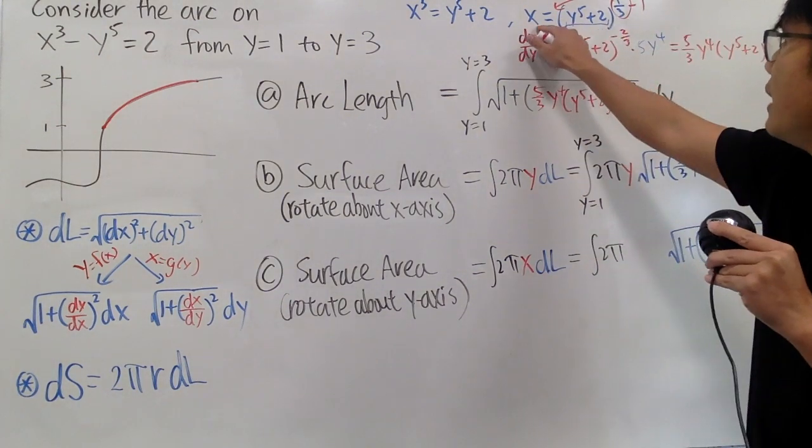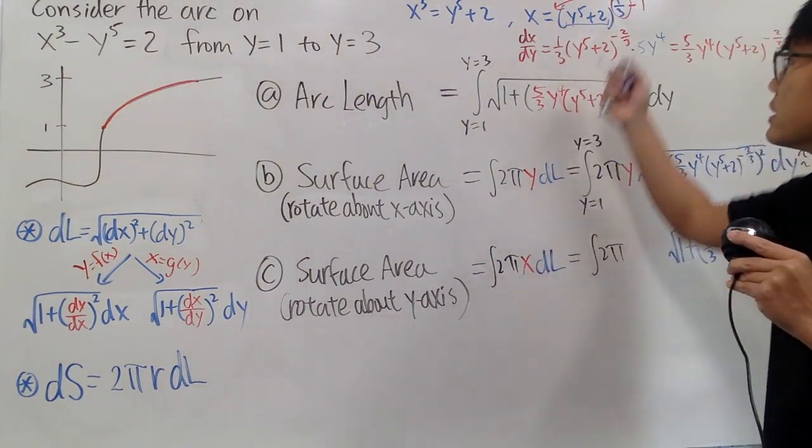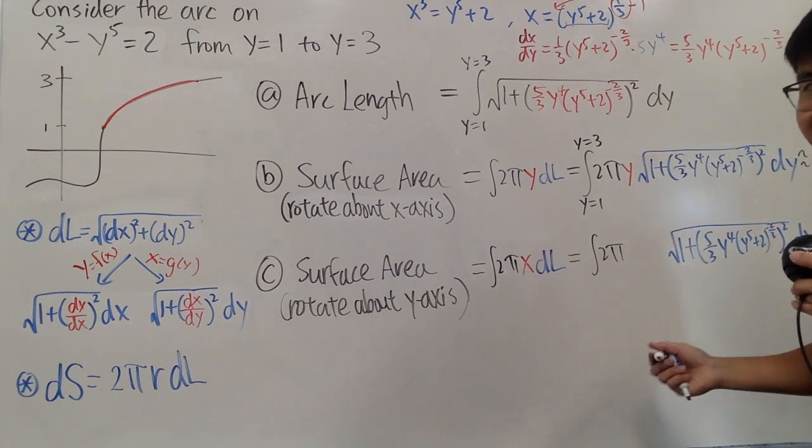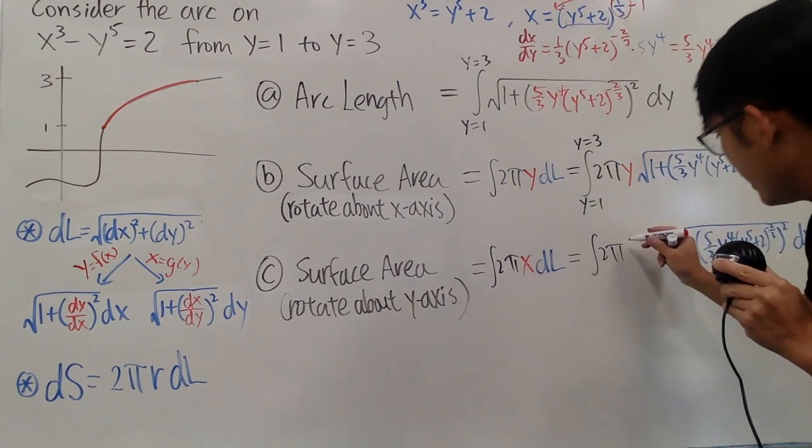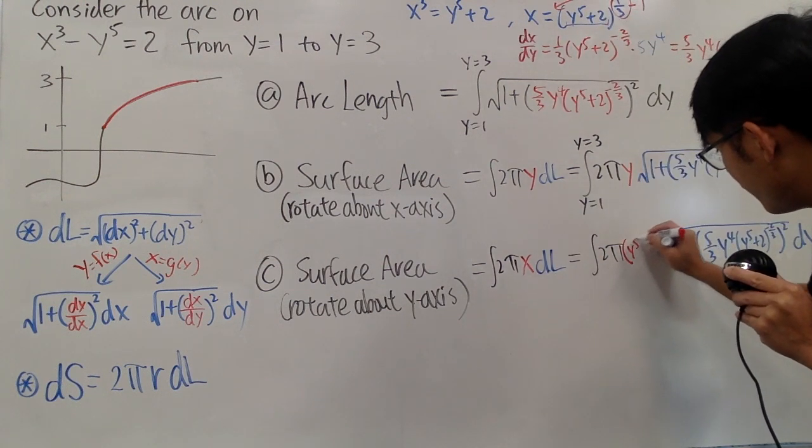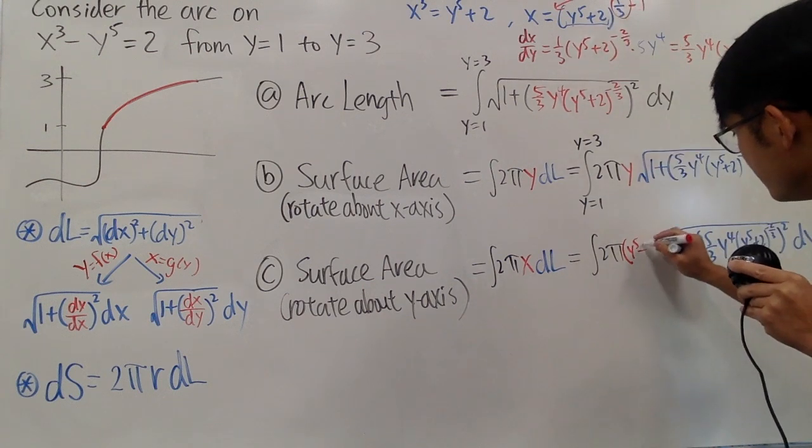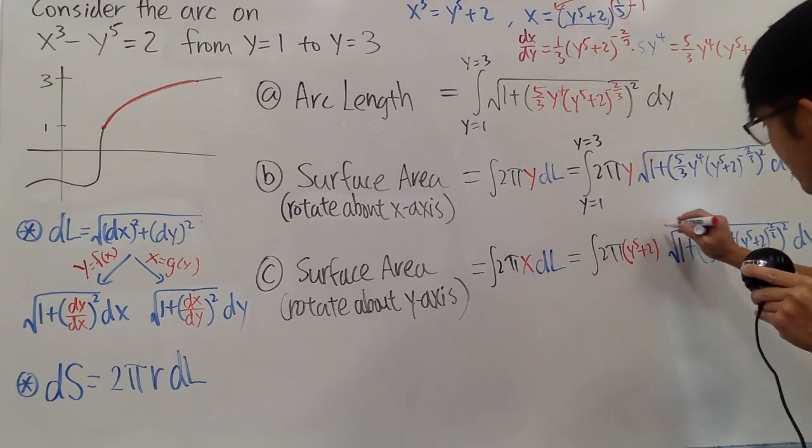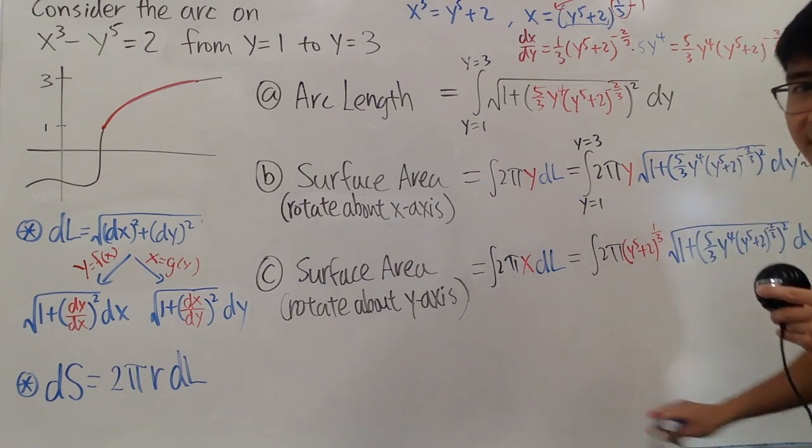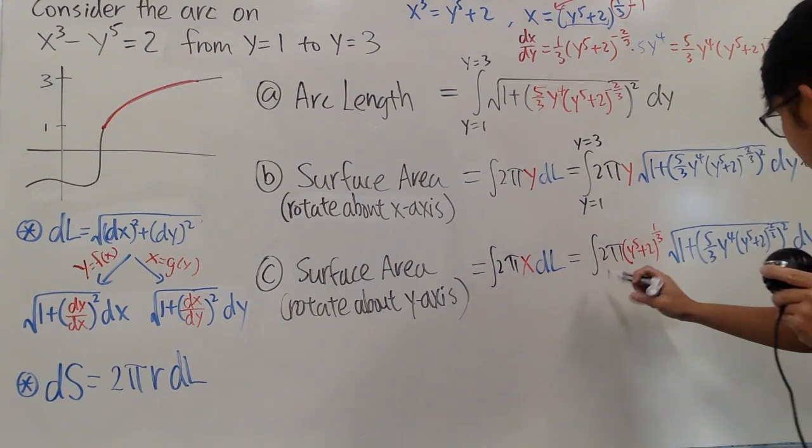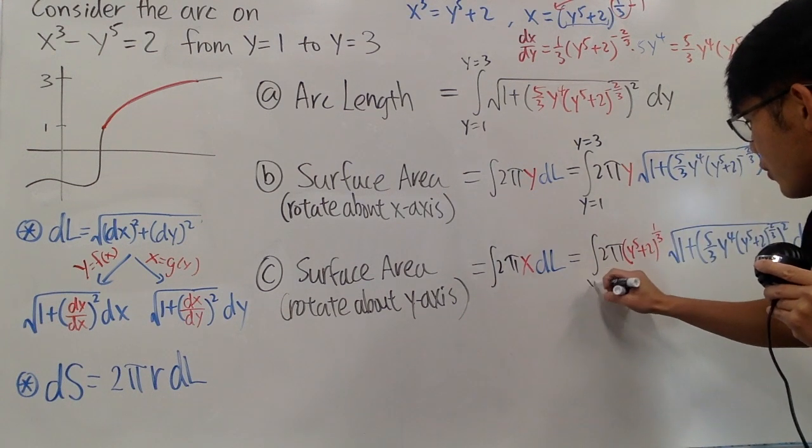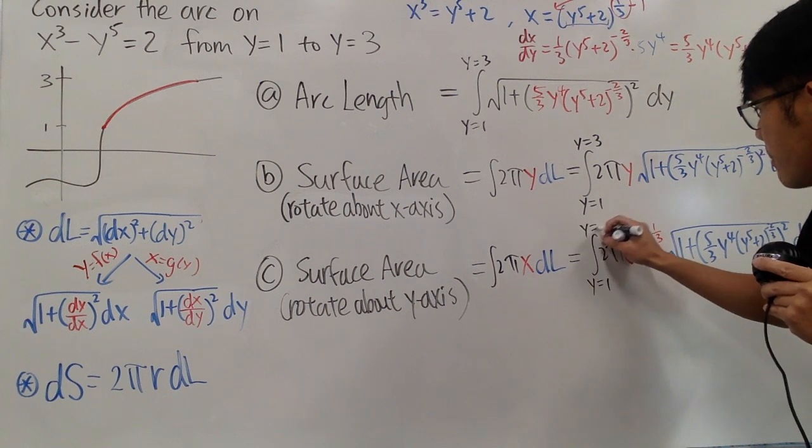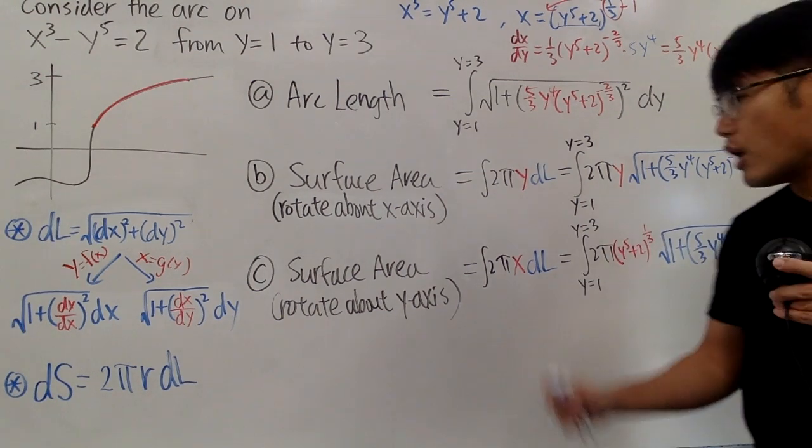Well, it's okay, because we know x is the same as that. So I will just put this down right here for the x. All right, so enter parentheses y to the 5th power plus 2 raised to the 1 3rd power. Like that. All right, so we're still done. So this is still good. And we, of course, go from y equals 1 up to 3. All right, so this is it.